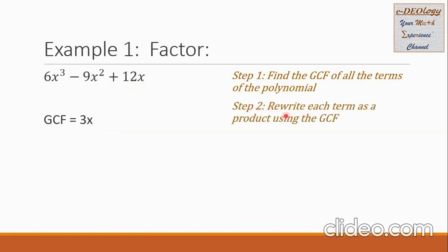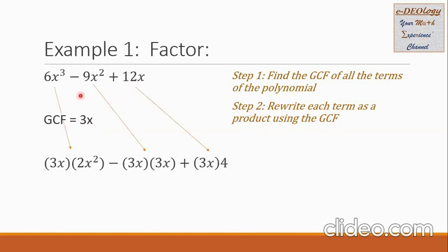Step 2: let us rewrite each term as a product using the GCF. We are going to split each term such that one factor is the GCF. So 6x cubed is factored into 3x and 2x squared. The second term, negative 9x squared, is factored into negative 3x — the GCF — times 3x. For 12x, the factors are the GCF 3x and the number 4.